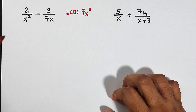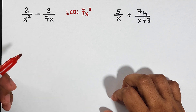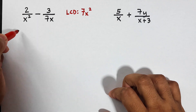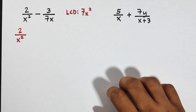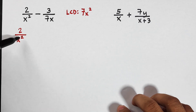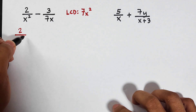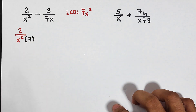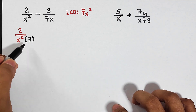Now, how are we going to subtract these expressions? Let's apply the method. For 2 over x squared, we need to think of a multiplier — what can we multiply by x squared to make it 7x squared? Basically we multiply by 7, since 7 times x squared is 7x squared, giving us that denominator.